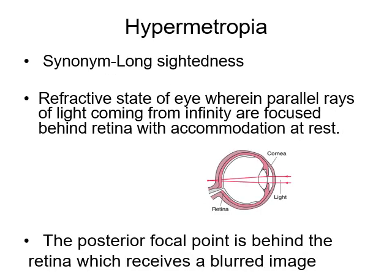The synonym for hypermetropia is long-sightedness. It is a refractive state of the eye wherein parallel rays of light coming from infinity are focused behind the retina with accommodation at rest. With accommodation at rest means the lens is flat and not accommodated. The posterior focal point is behind the retina, which receives a blurred image. In this picture, you can see that light depicted in red is coming from infinity and focused behind the retina, so the patient will get a blurred image.